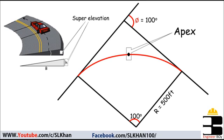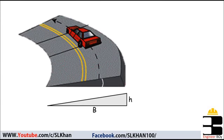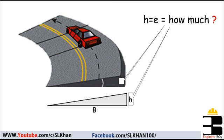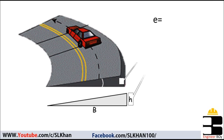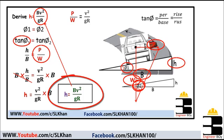What should be the value of full super elevation? For this approach we can use the following formula: e equals bv squared divided by gr. This formula was derived in the previous class, so if you want the derivation, you can watch that video — the link is down below in the video description.